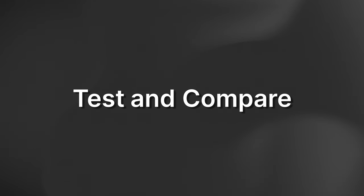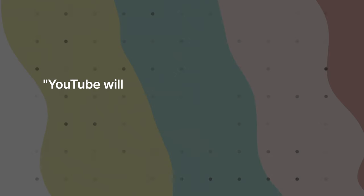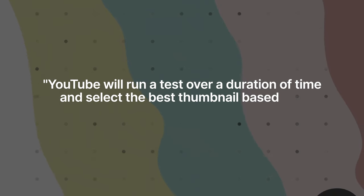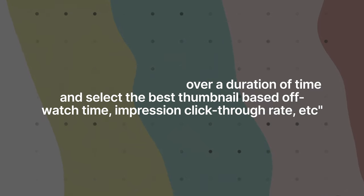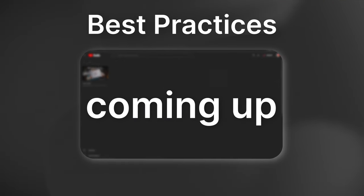It's called Test and Compare. Test and Compare is YouTube's beta launch feature which automatically changes up to three thumbnails for your video. YouTube will run a test over a duration of time and select the best thumbnail based on watch time, impression, click-through rate, et cetera. I'm going to show you how you could possibly get early access to that later in the video, and there are some important best practices you need to remember when doing this.